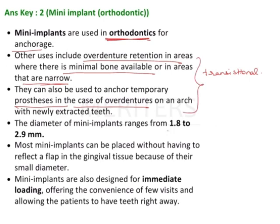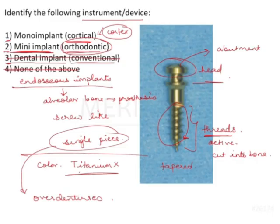They can also be used as transitional implants, though mainly they are used for orthodontic purposes. These are older concepts where additional reinforcement was achieved with mini implants to support a prosthesis — this is no longer used. The diameter of mini implants ranges from 1.8 to 2.9 millimeters, which is an important fact. Most mini implants can be placed without reflecting a flap, and they are designed for immediate loading, allowing patients to have teeth right away.